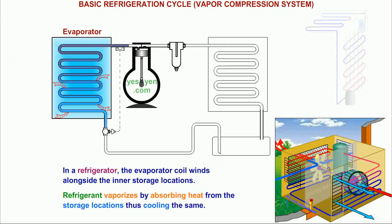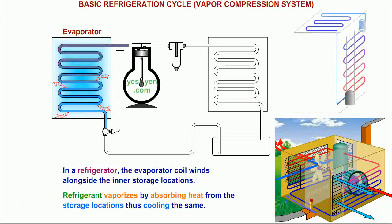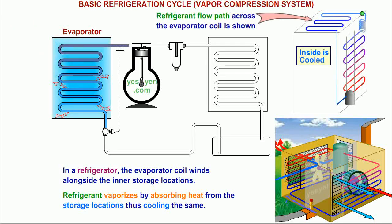In a refrigerator, the evaporator coil winds alongside the inner storage locations. Refrigerant vaporizes by absorbing heat from the storage locations, thus cooling the same.